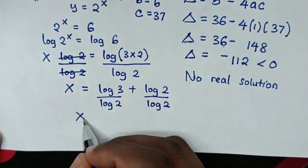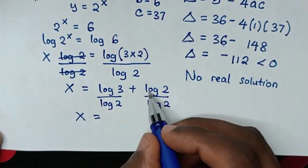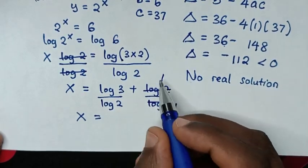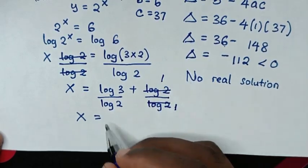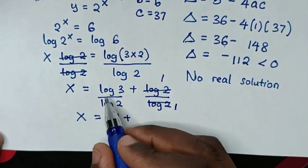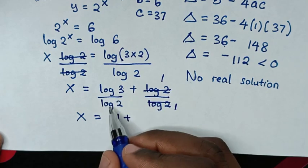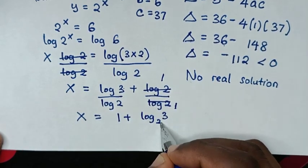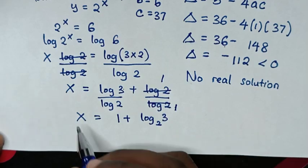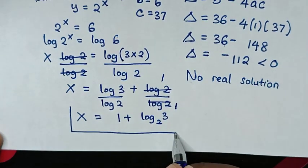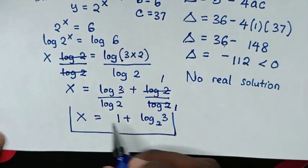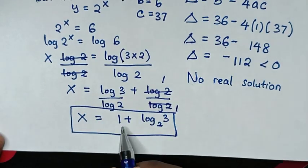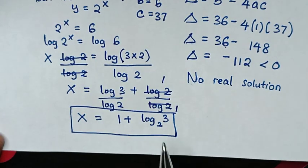So x equals 1 plus log(3)/log(2), which is the same as 1 plus log base 2 of 3. This is the final answer for the value of x: x = 1 + log₂(3).